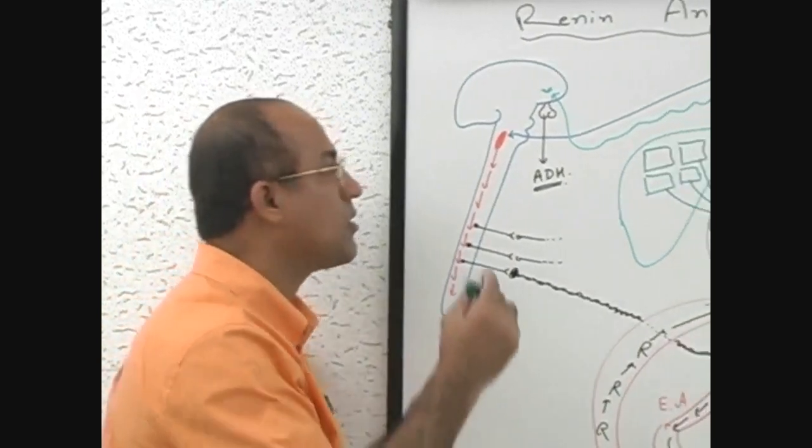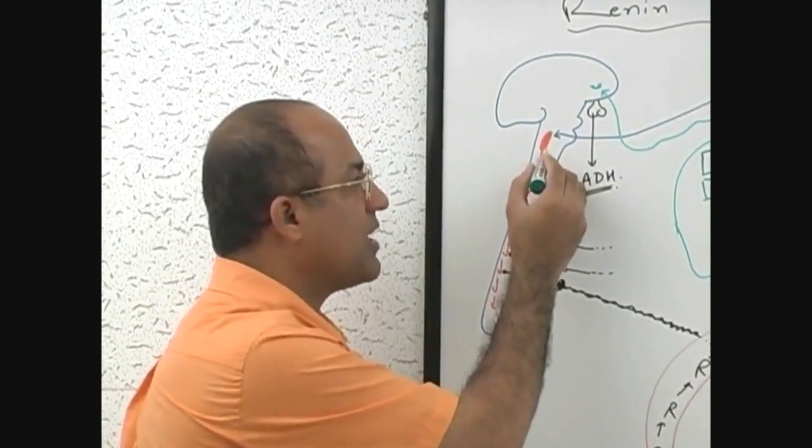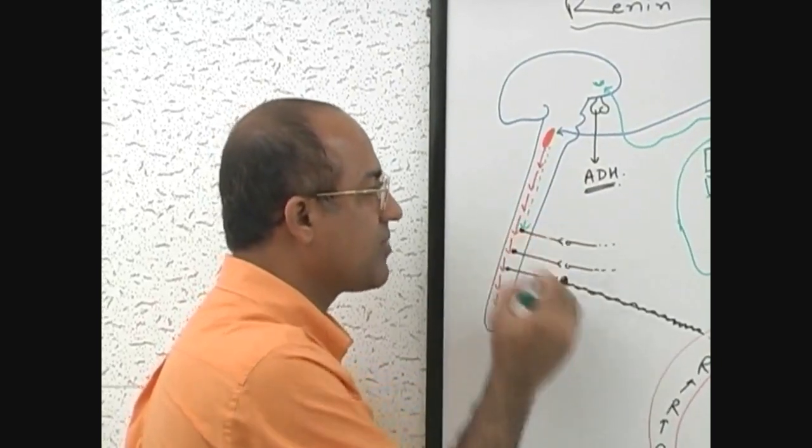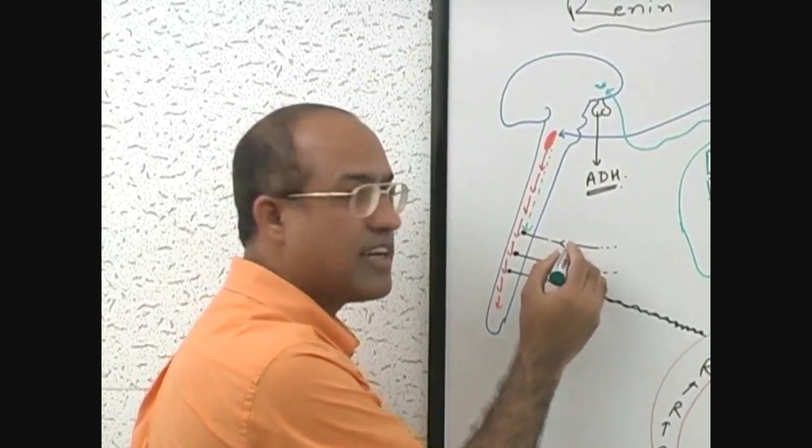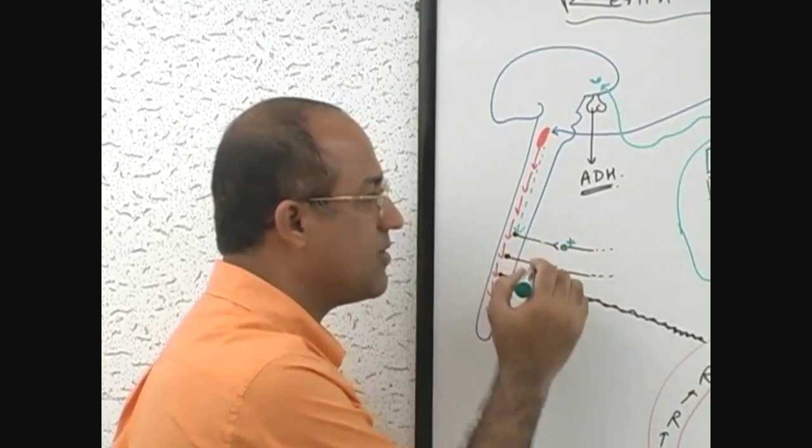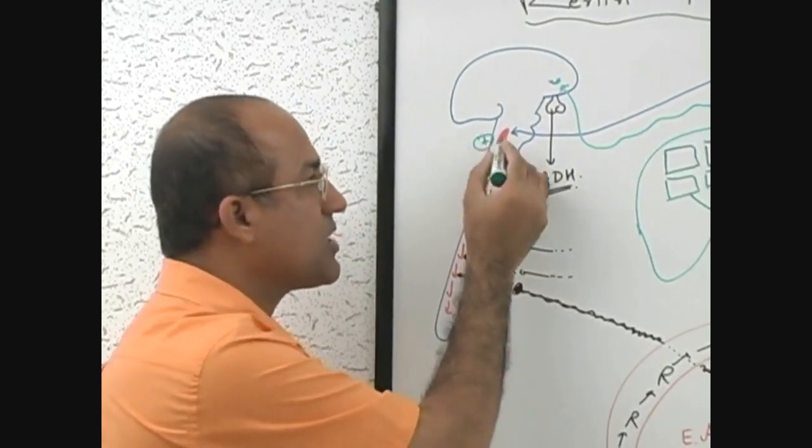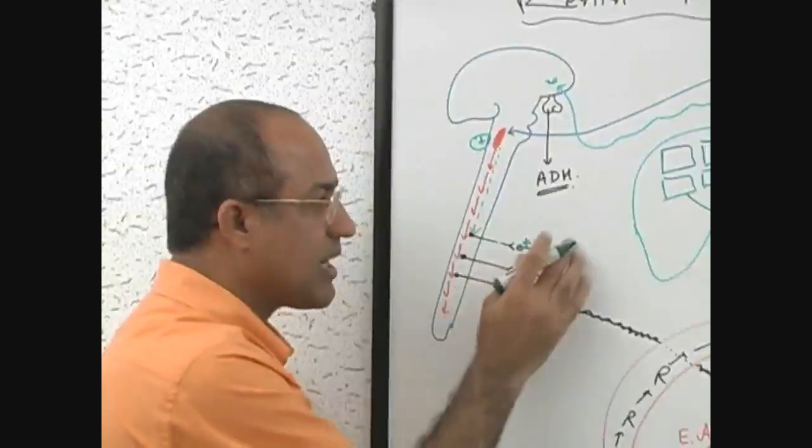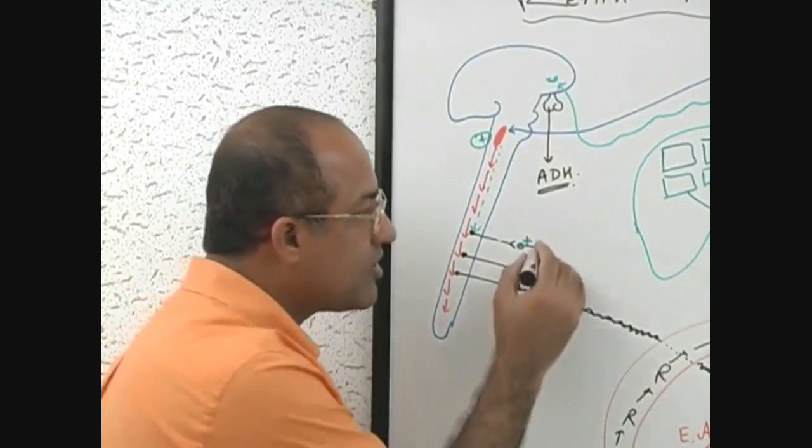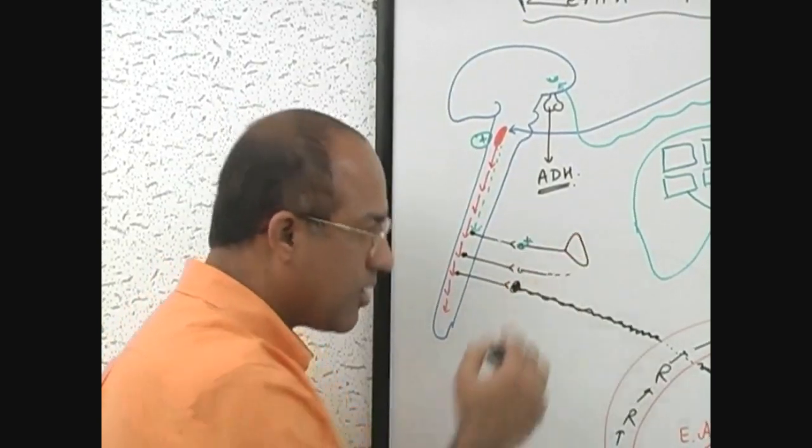Angiotensin-2 receptors are present on many components of the sympathetic nervous system. So what really happens, look here, central sympathetic outflow will increase, number one. Then these cells in the ganglia, sympathetic ganglia, they are also stimulated. First central sympathetic outflow is stimulated, then these ganglia are stimulated.